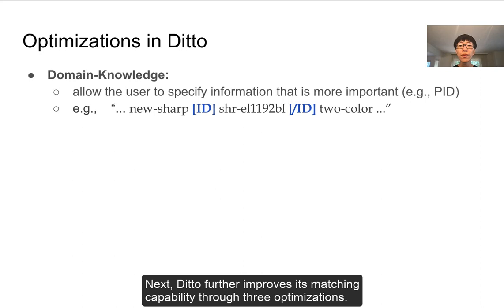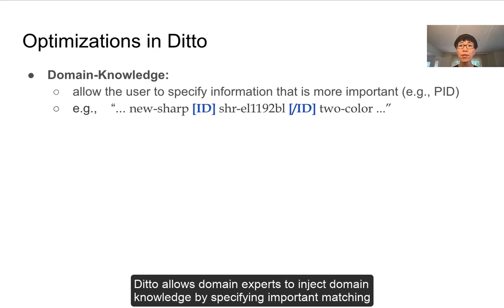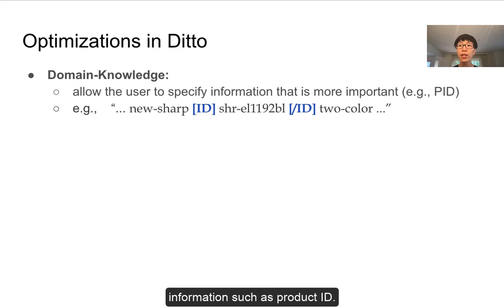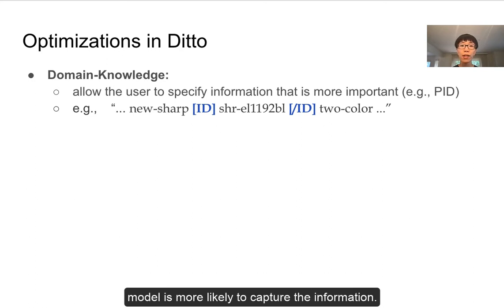DITTO further improves its matching capability through three optimizations. First, to help the language model focus on the most important matching information, DITTO allows domain experts to inject domain knowledge by specifying important matching information such as product ID. DITTO adds additional special tokens such as ID and slash-ID so that the language model is more likely to capture them.